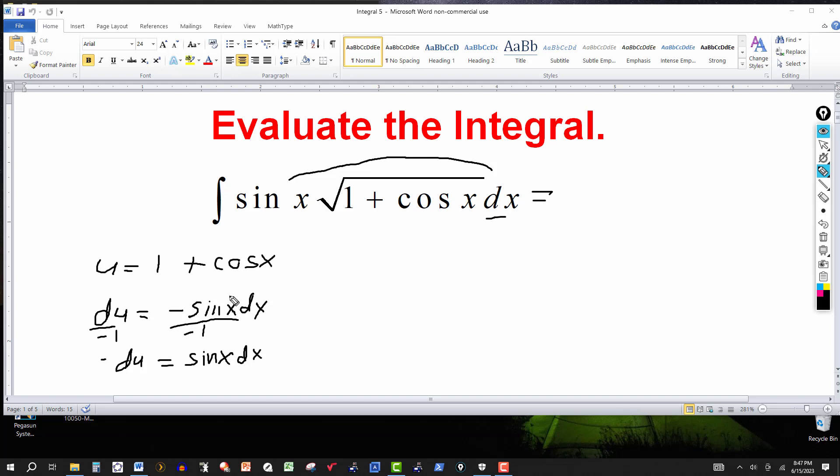So with this we should be able to convert this to an integral involving u only. So this will be the integral. Again, sine x dx will be replaced by minus du. I'll put the minus sign in front. And then the 1 plus cosine of x is u. So this will be u. Instead of the square root symbol, I use u to the one half.